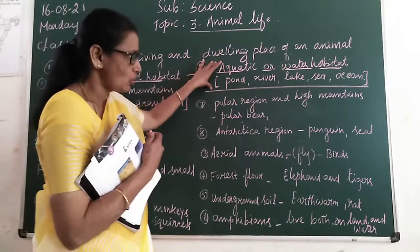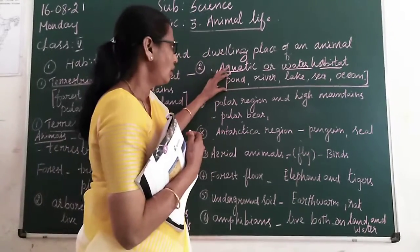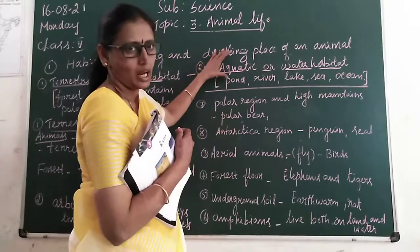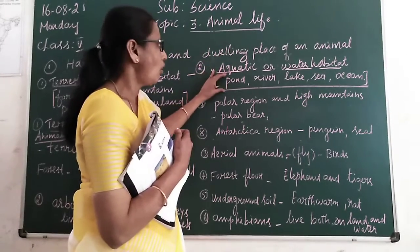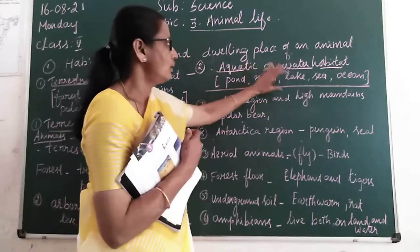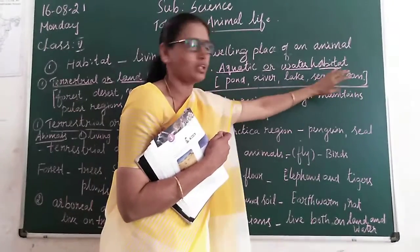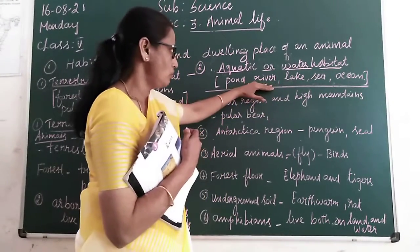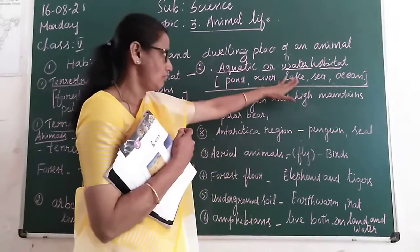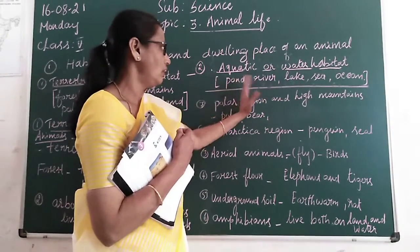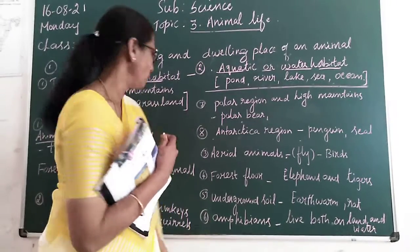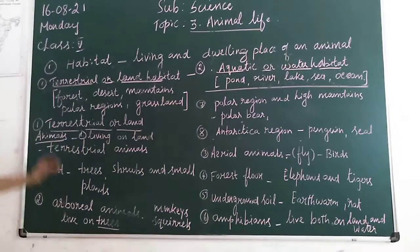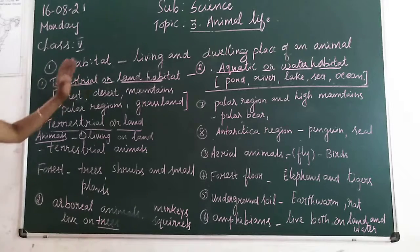Animals which live in water habitat or aquatic habitat are found in places like pond, river, lake, sea, and ocean. Some animals live in ponds, some in lakes, different animals live in rivers. Now we are going to learn about terrestrial or land animals.